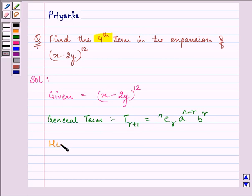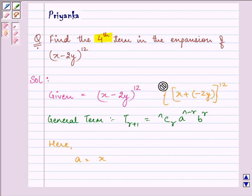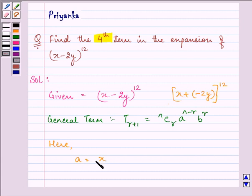Now here, if you compare, a is equal to x, whereas this can be written as x + (-2y) raised to the power 12. So if you compare, we have a = x, b = -2y, and n = 12.